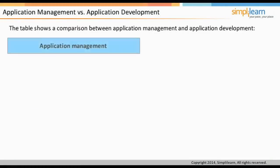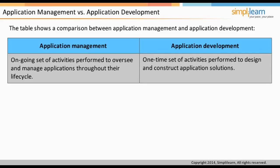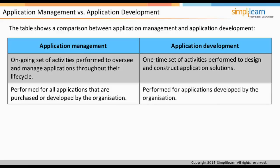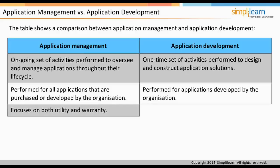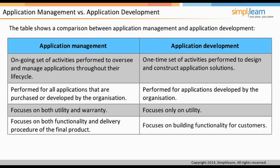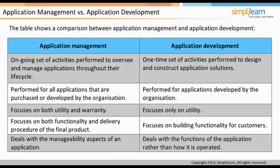Application management is an ongoing set of activities performed to oversee and manage applications throughout their lifecycle, whereas application development is a one-time set of activities executed to design and construct application solutions. Application management is performed for all applications, whether purchased from third parties or developed within the organization. Application management focuses on both utility and warranty, but application development focuses only on utility. Application management addresses both functionality and delivery procedures, while application development focuses on building functionality for customers. Application management deals with the manageability aspects of an application, whereas application development focuses on functions rather than how the application is operated.